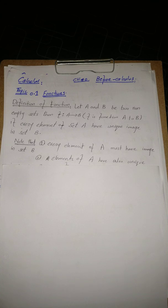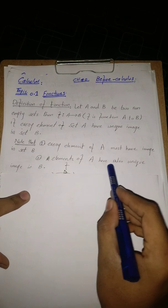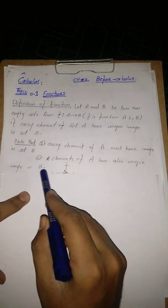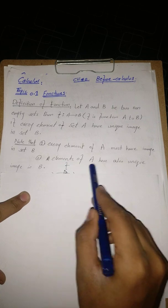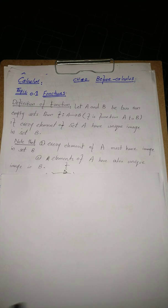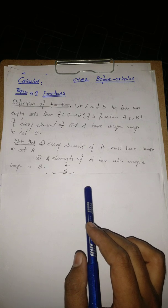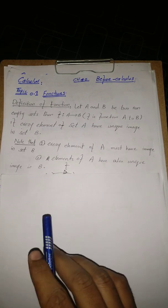The second restriction is: elements of A must also have a unique image in B. All elements of set A must have a unique image. There must not exist any element in set A which has more than one image in B. Now we take some examples and see whether they are functions or not.